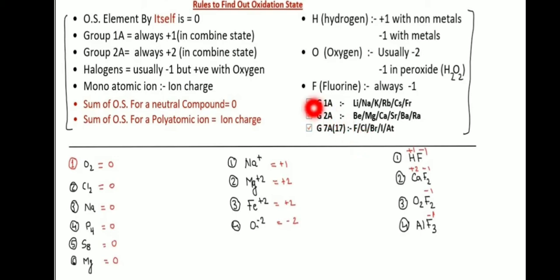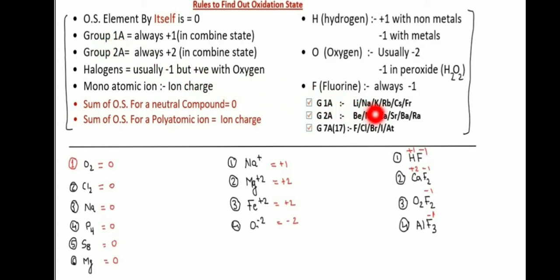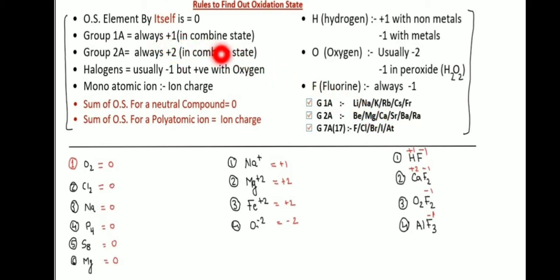Again one more time: oxidation state of element by itself is zero. Group 1A elements — Lithium, Sodium, Potassium, Rubidium, Cesium, and Francium — oxidation number plus one in combined state.